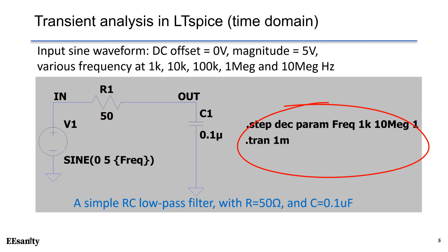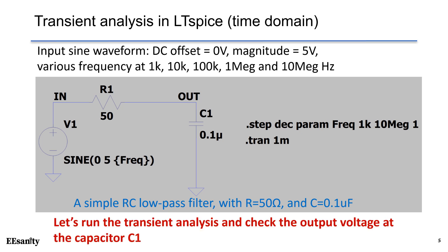The simulation time is 1 ms for each step. So this is a simple RC low-pass filter using resistor as 50 ohm and capacitor as 0.1 microfarad. Now let's run simulation and check the output voltage across C1.